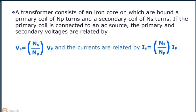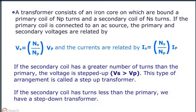A transformer consists of an iron core on which a primary coil of Np turns and a secondary coil of Ns turns. If the primary coil is connected to an AC source, the primary and secondary voltages and currents are related by the shown relations respectively. If the secondary coil has a greater number of turns than the primary, the voltage is stepped up. This type of arrangement is called a step-up transformer. If the secondary coil has turns less than the primary, we have a step-down transformer.